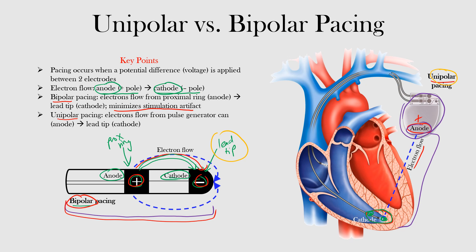With unipolar pacing, we are at risk of more stimulation artifact because the electrons have to flow a farther distance compared to bipolar. The anode is at the pulse generator and the cathode is at the lead tip, so the electrons must travel that whole distance, potentially picking up excitable tissue between the two and causing an artifact on the EKG.